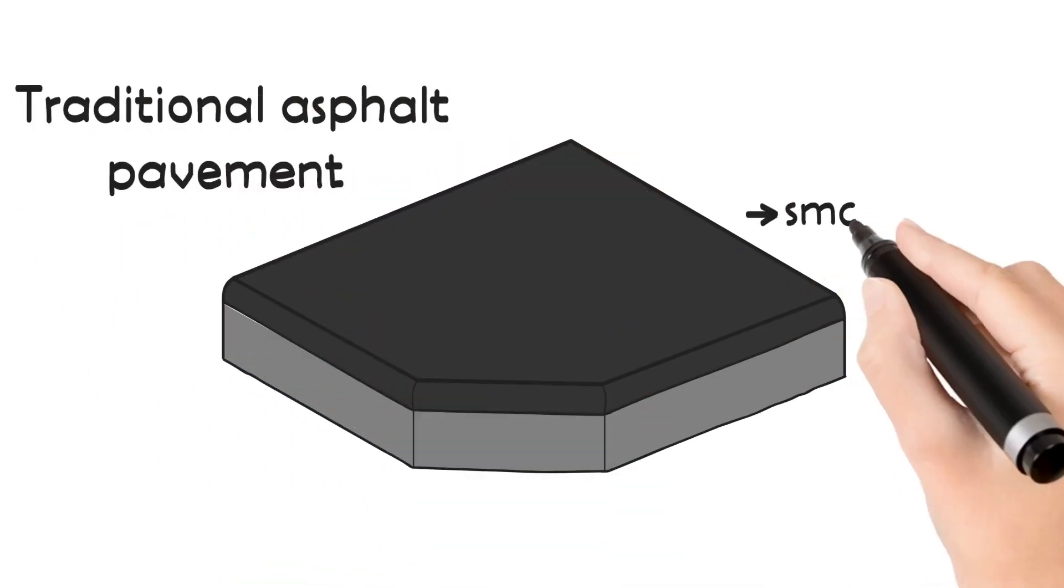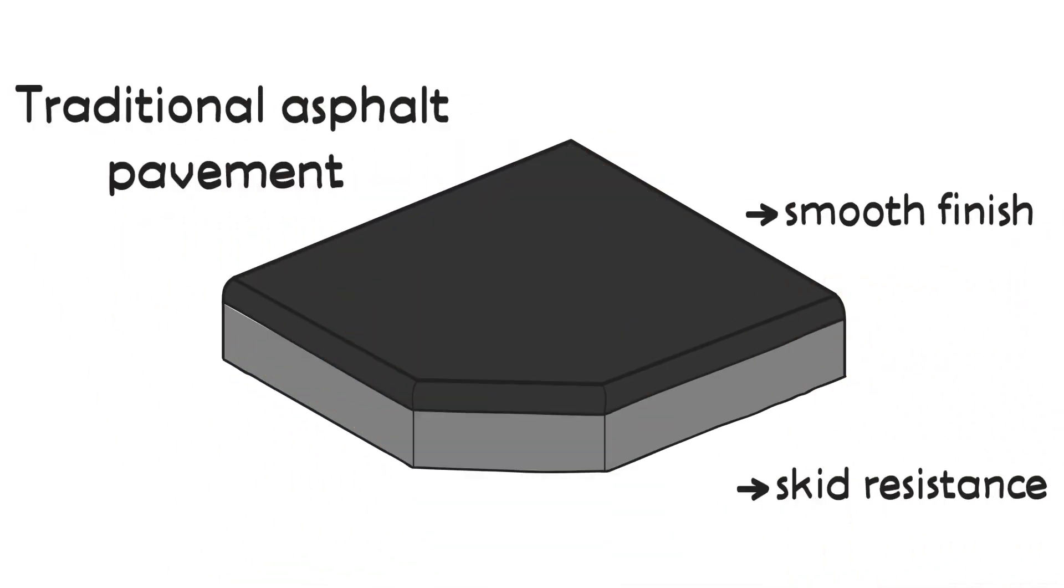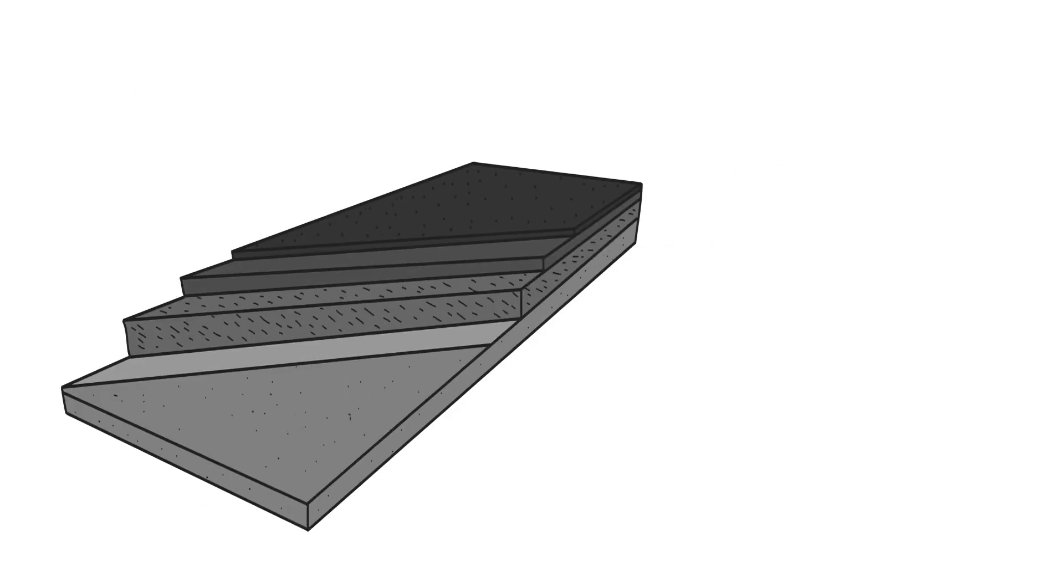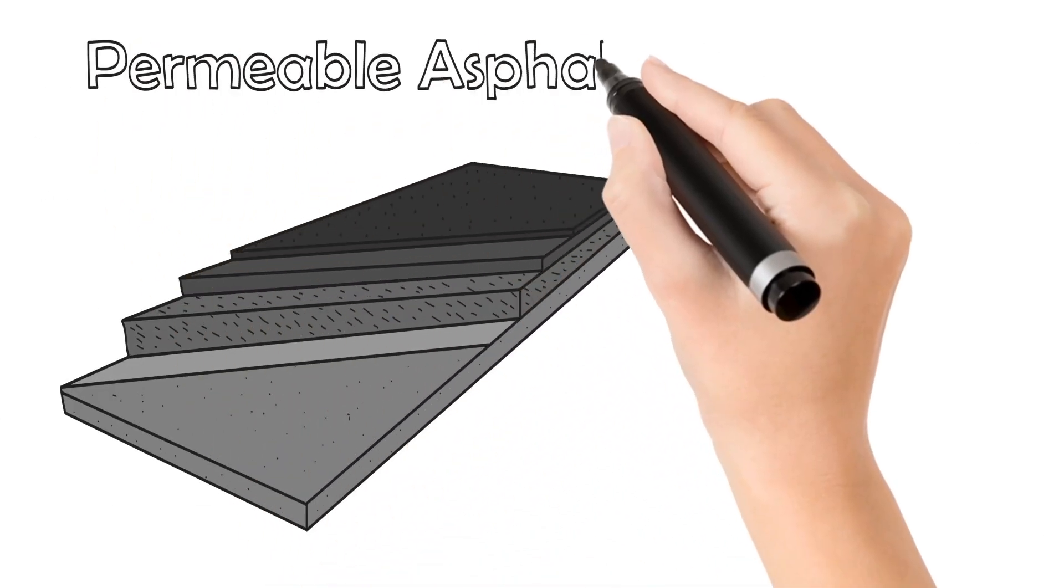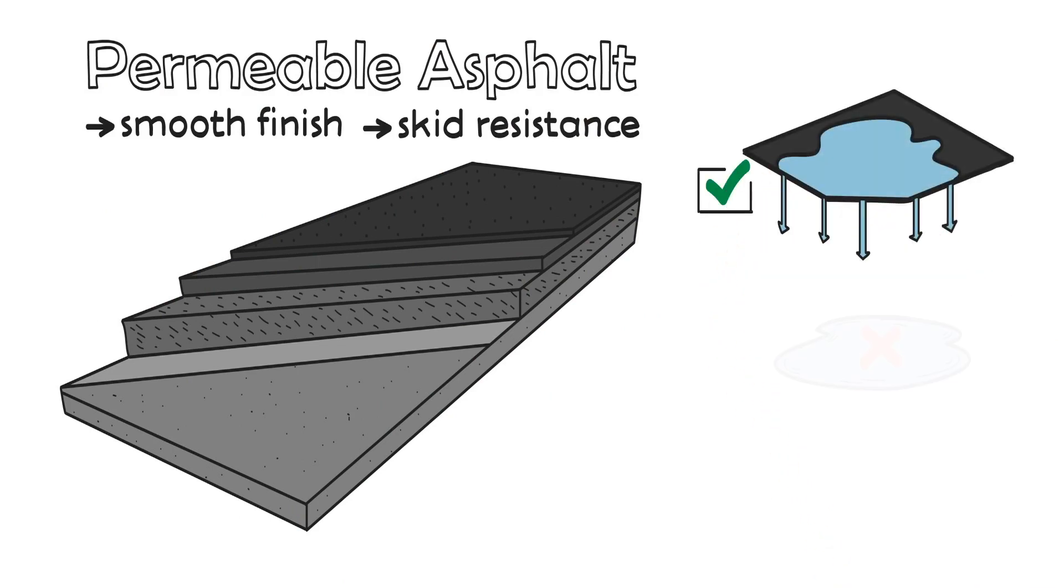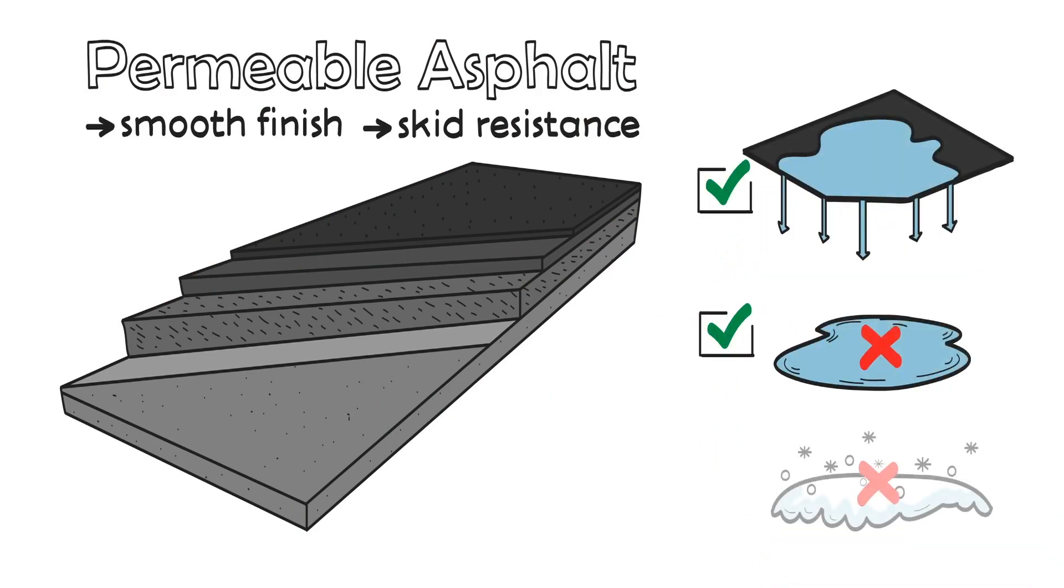Traditional asphalt pavement is designed to provide a smooth finish and have an appropriate level of skid resistance. Permeable asphalt has these features but allows the water to drain, removing the risks of standing water and ice.